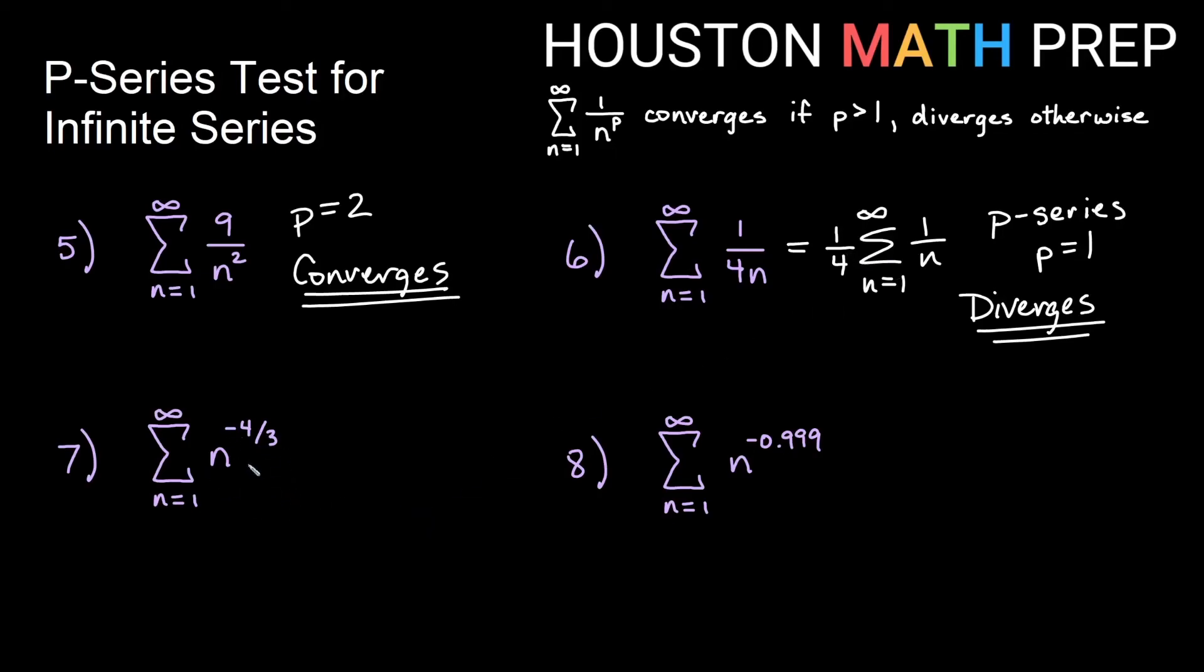This may not look like a p-series in its written form, but we want to see this as the sum of 1 over n to the 4 thirds, because of the negative power. This is a p-series where p is 4 thirds. 4 thirds is greater than 1, so this converges. Our last one, n to the negative 0.999. Think of this as 1 over n to the 0.999. That's not greater than 1, so this diverges by the p-series test.